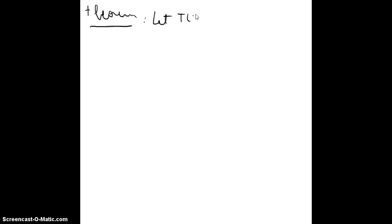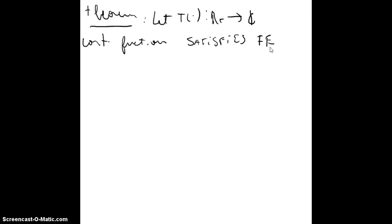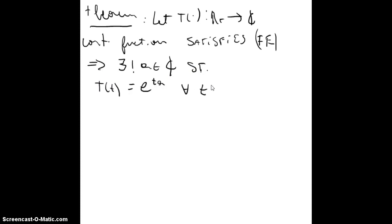Taking both results together leads to the following theorem: let f from R⁺ to C be a continuous function satisfying the functional equation. Then there exists a unique A in the complex numbers such that f(t) = e^(tA) for all t ≥ 0. So e^(tA) satisfies both the functional equation and the differential equation.